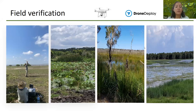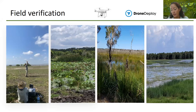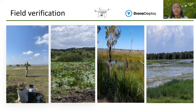So what we've been using is this commercial drone — a DJI Phantom — and an app called Drone Deploy, which has been really great and really easy to use to make maps of different wetlands.